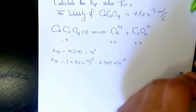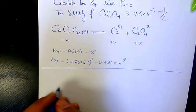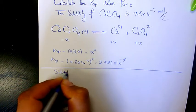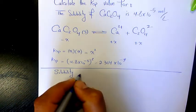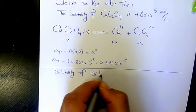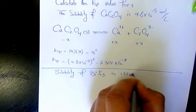Let's see another example. Next one, the solubility of BiI3 is 1.32 times 10 to the power of negative 5 mole per liter, and we need to find out the Ksp.